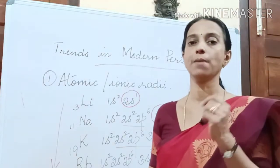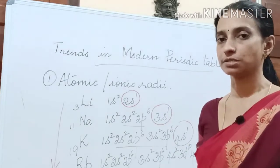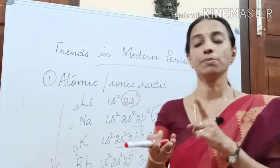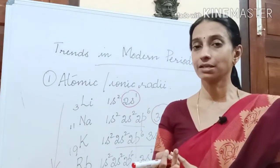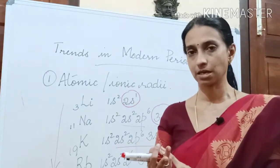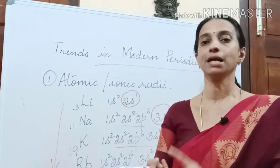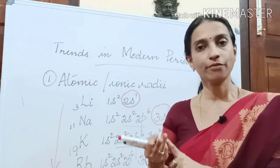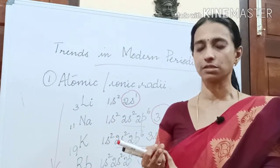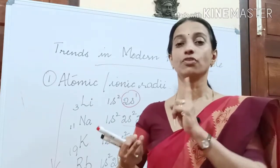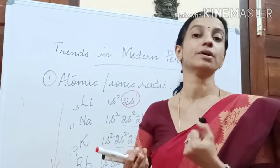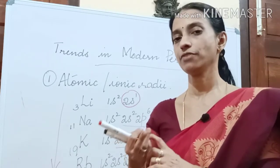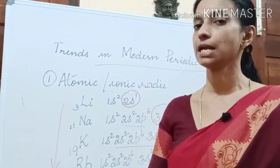So in summary, when moving down the group: atomic number increases, nuclear charge increases, and shielding effect also increases. With the result, the valence electrons do not feel the effect of the growing nucleus — so the outermost electron will be far away from the nucleus, and the size keeps on increasing.